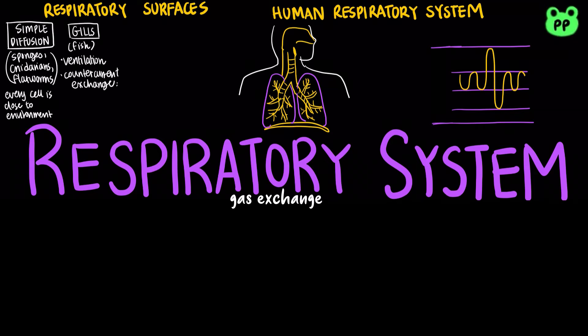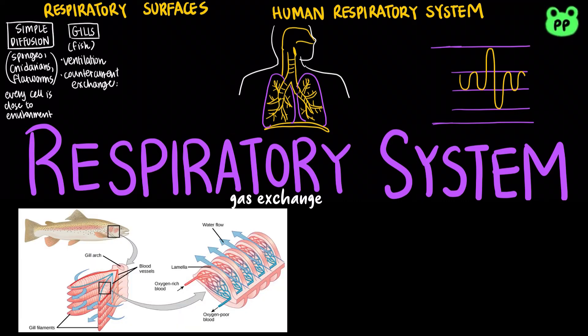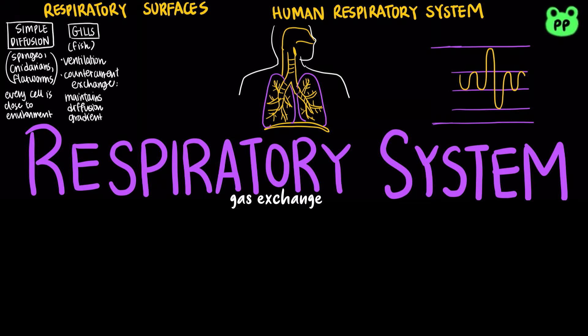Fish gills use a countercurrent exchange system, where blood flows in the opposite direction to water passing over the gills. This maximizes diffusion since blood is always less saturated with oxygen than the water it meets.